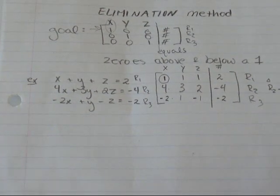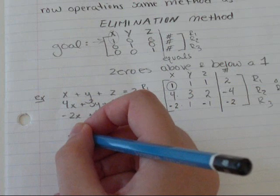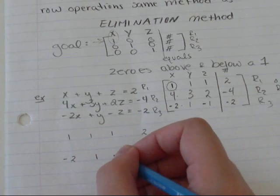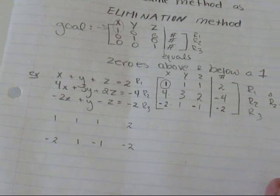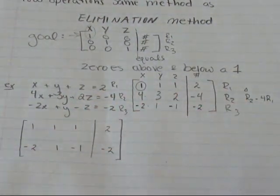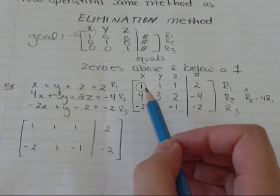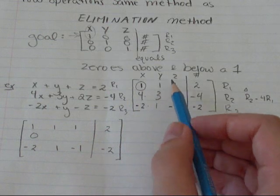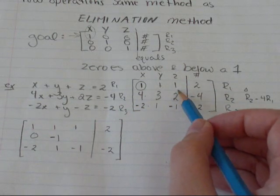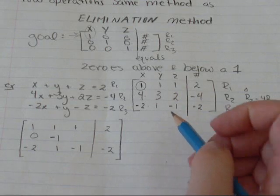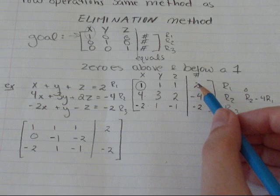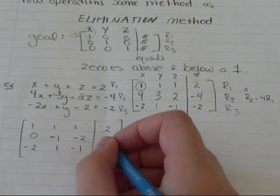I'm not changing row 1, so that stays: 1, 1, 1, 2. I'm not changing row 3: negative 2, 1, negative 1, negative 2. For row 2 minus 4 row 1: 4 minus 4 is zero. 3 minus 4 times 1 is 3 minus 4, which is negative 1. 2 minus 4 times 1 is 2 minus 4, which is negative 2. And in the number column: negative 4 minus 4 times 2 is negative 4 minus 8, which is negative 12.